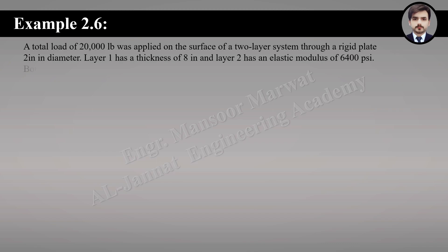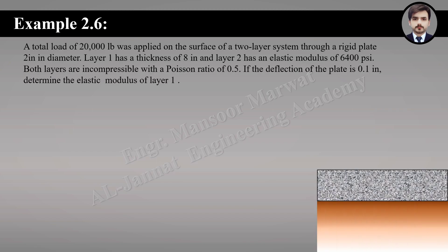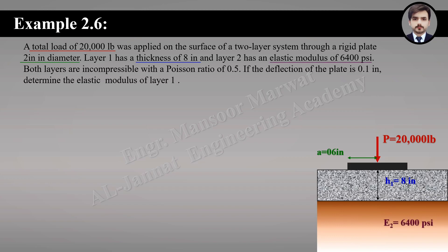Let's solve Example 2.6. A total load of 20,000 pounds was applied on the surface of a two-layer system through a rigid plate 12 inches in diameter. Layer 1 has a thickness of 8 inches, and layer 2 has an elastic modulus of 6,400 psi. Both layers are incompressible with a Poisson's ratio of 0.5. If the deflection of the plate is 0.1 inch, determine the elastic modulus of layer 1.